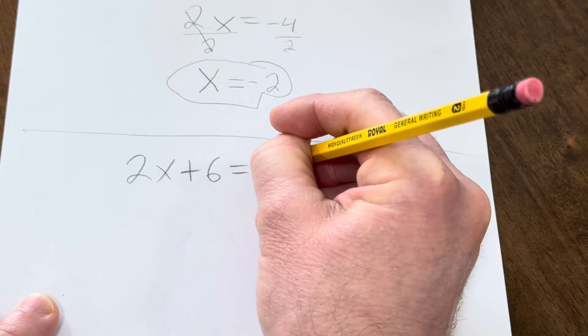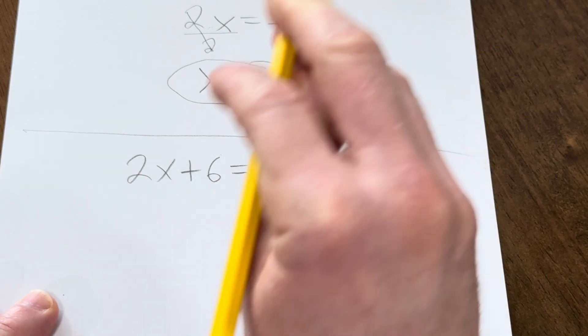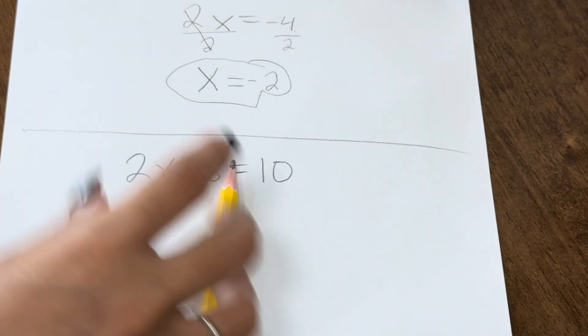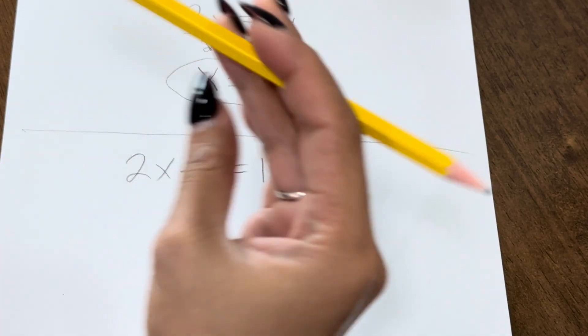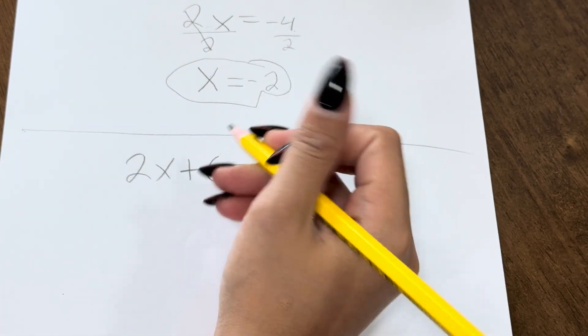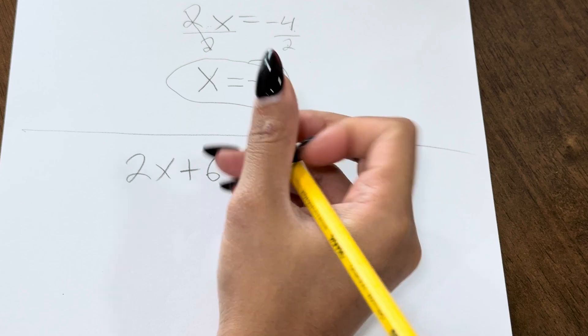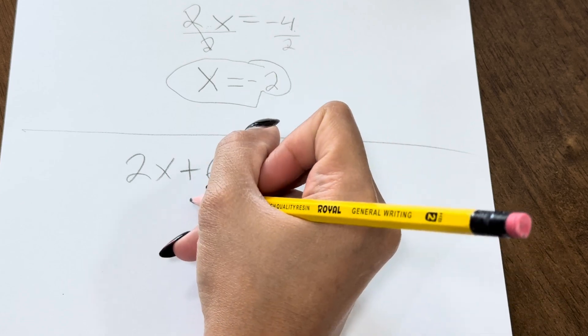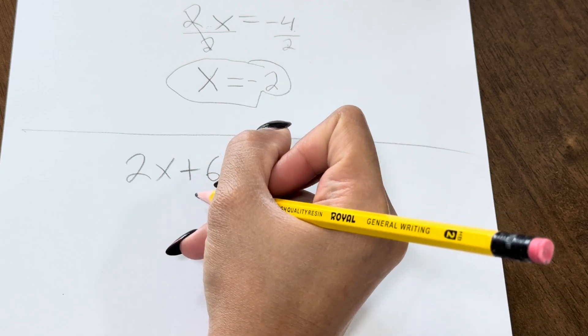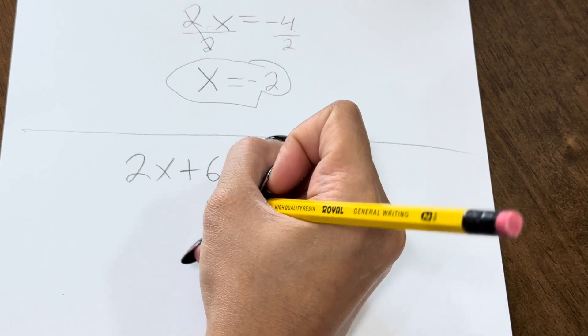All right, you think you got this? Let's try — life or death. No, I'm kidding. Go ahead. So what's the first step? Six.